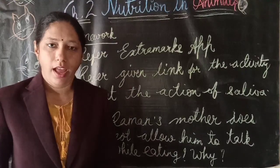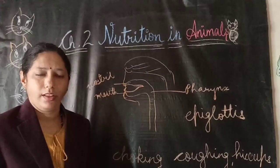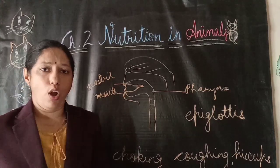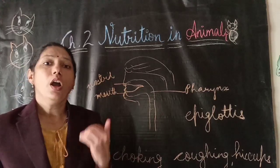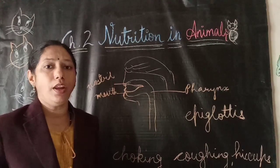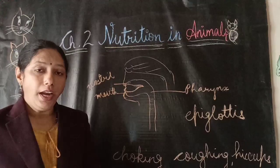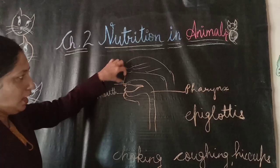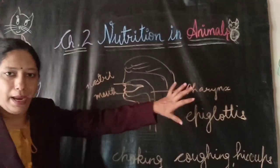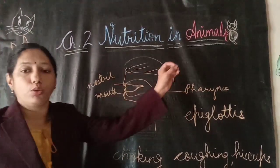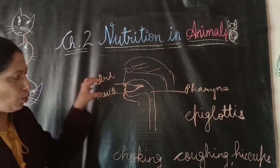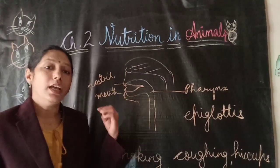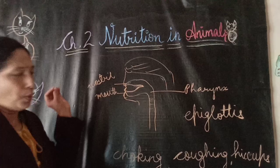The answer is: Raman's mother does not allow him to talk while eating because if he talks, he may have coughing, get hiccups, or feel a choking sensation. This happens because when air is taken through the nostrils, it goes into the windpipe — also known as the trachea — and when we take food through the mouth, the food goes towards the food pipe, which we call the esophagus.